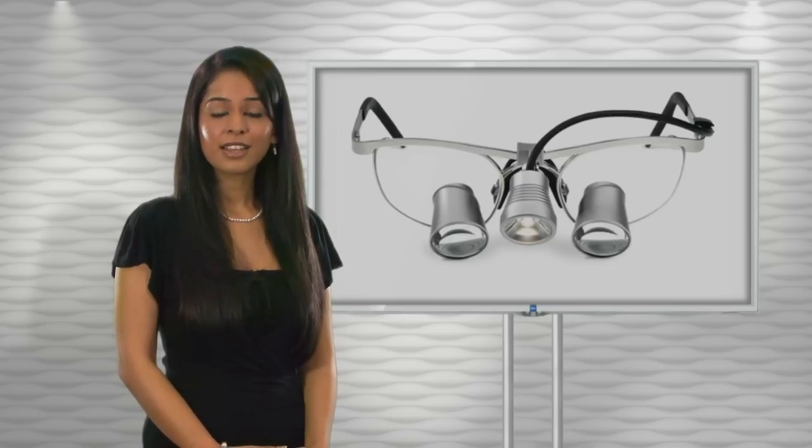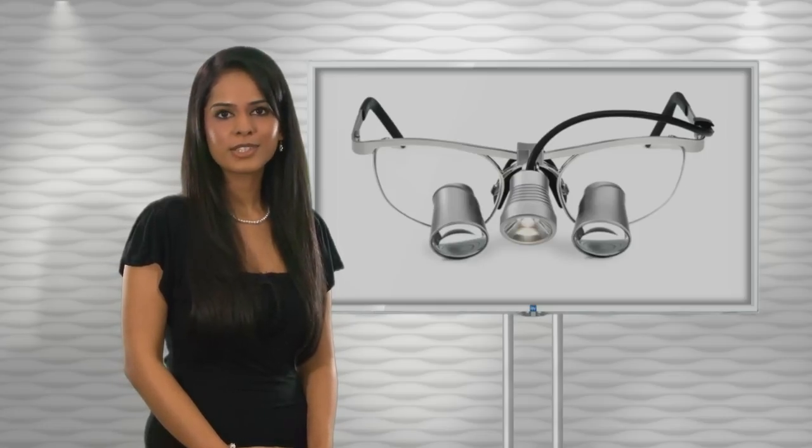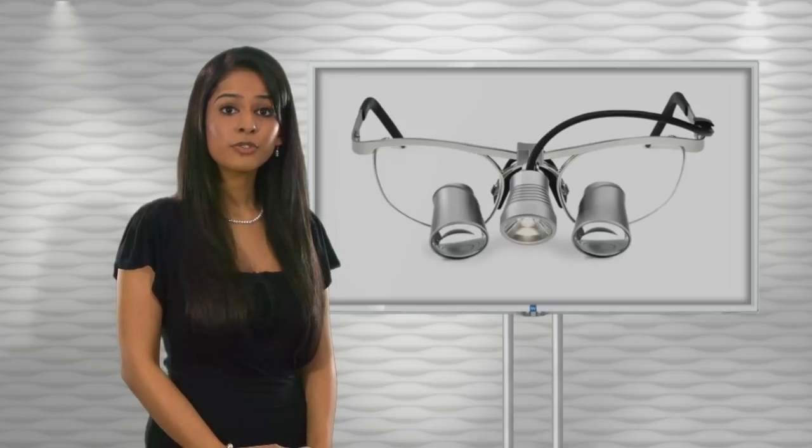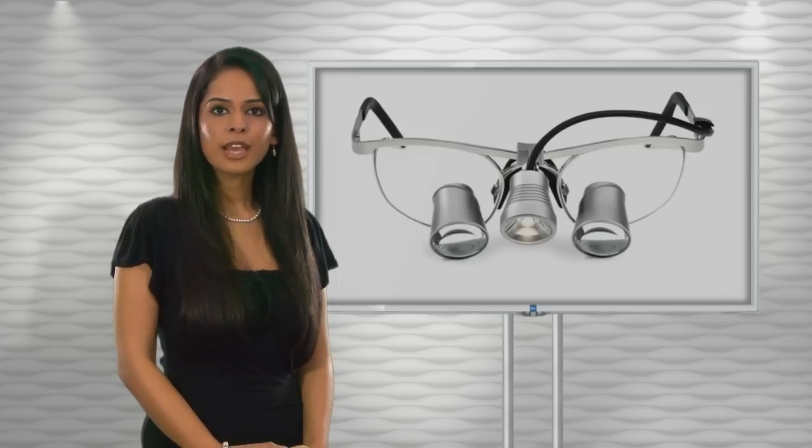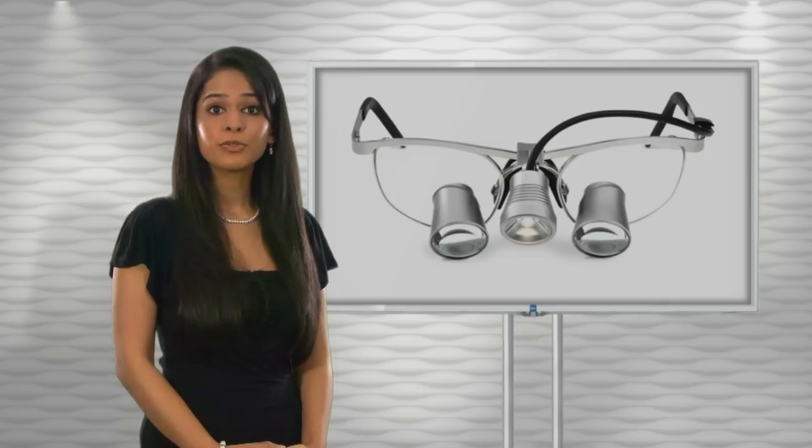There are many companies out there selling loupes, including OptiLoop, Optident, Orascoptic, and the list goes on. Prices range from a few hundred to a few thousand. Whatever you get, make sure you know what you're paying for. For example, is it the lens or the frame or something else? And then decide what is important for you.